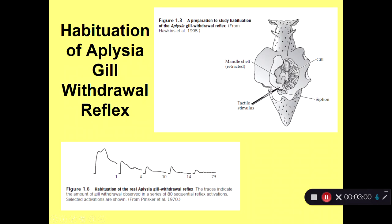If a big fish comes along and starts to bite the Aplysia, it'll immediately resensitize this reflex so it can withdraw its gill again. But in the short term, it's habituated the reflex so it can continue to breathe over its gill, even though it might be buffeted around in the surf.